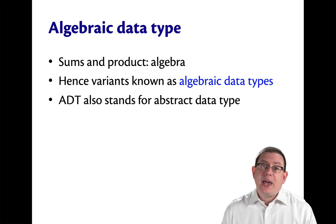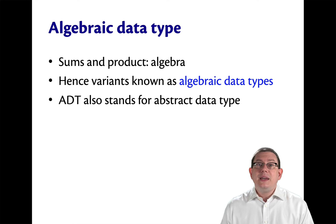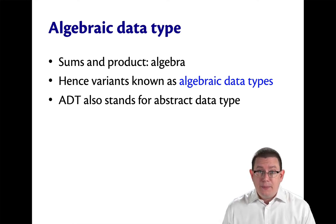When you have both sums and products, that might remind you of algebra. Indeed, variants are also known as algebraic data types, because they allow the combination of sums and products. They allow the combination of each of types and one of types.